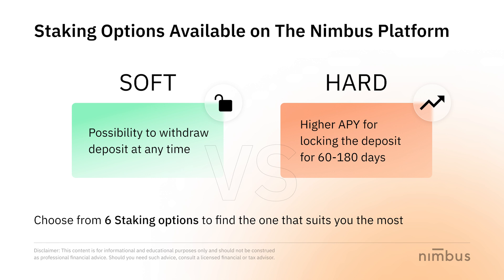The soft and hard staking essentially differ in the flexibility of withdrawing the deposited tokens and the reward levels you receive. In soft staking, you can withdraw your deposits at any time. In hard staking, your tokens get locked for a specified minimum staking period, from 60 to 180 days. The advantage of hard staking is the higher APY that you receive in return.